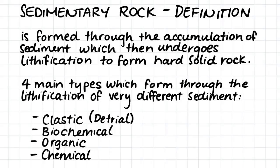Sedimentary rock is formed through the accumulation of sediment, which then undergoes a process of lithification to form hard, solid rock. There are four main types of sedimentary rock, which all form from the cementing of different types of sediment.